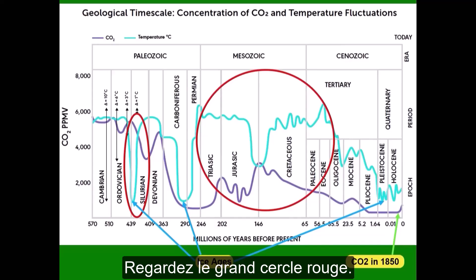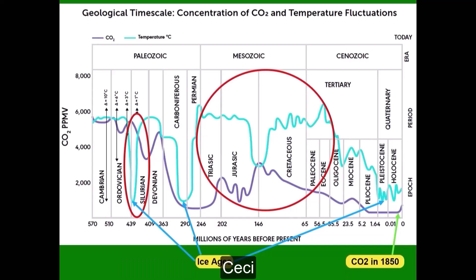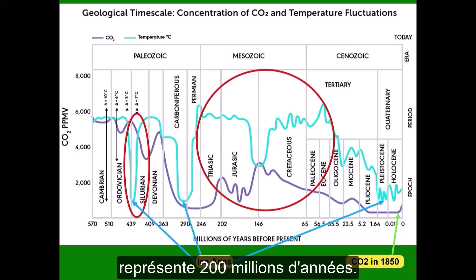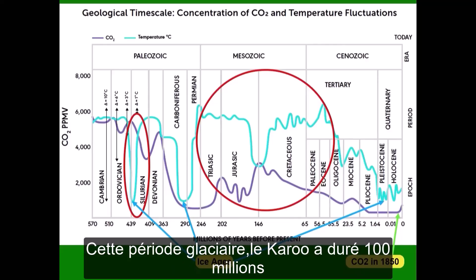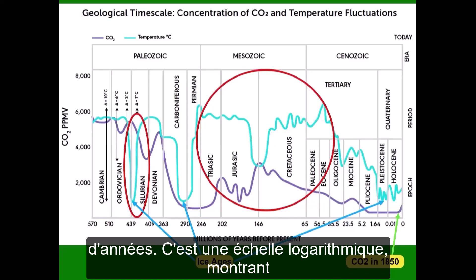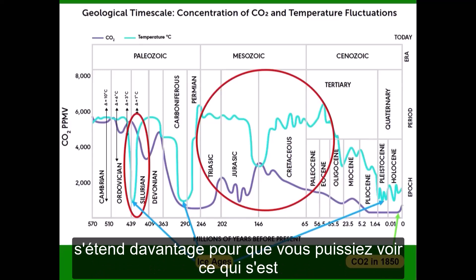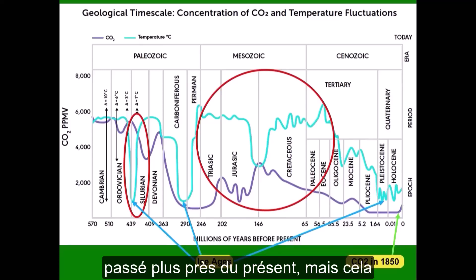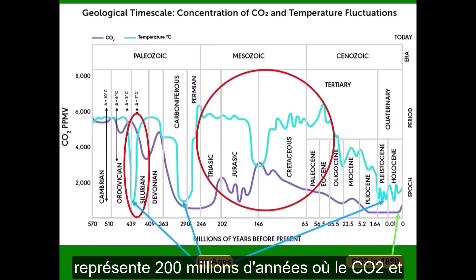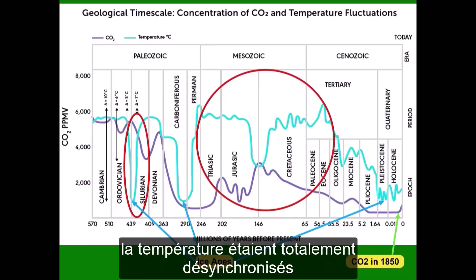Look at the big red circle. This is 200 million years. That ice age, the Karoo, lasted for 100 million years. It's a logarithmic scale — when you get closer to the present, it stretches out more, so you can see what's happened closer to the present. But that is 200 million years where CO2 and temperature were totally out of sync with each other.